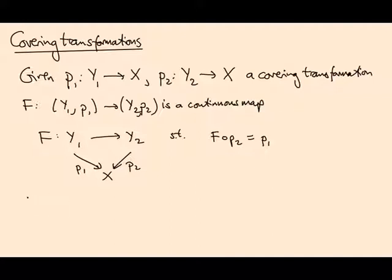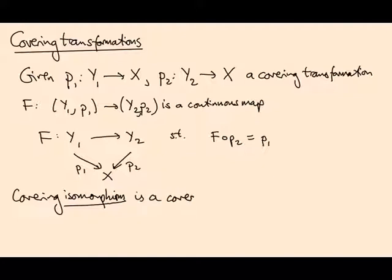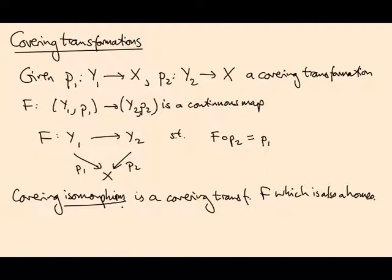A covering transformation is called a covering isomorphism if this map is also a homeomorphism. This allows us to say when two covering spaces are essentially the same — we can say they're isomorphic — meaning there is a covering isomorphism that relates them.